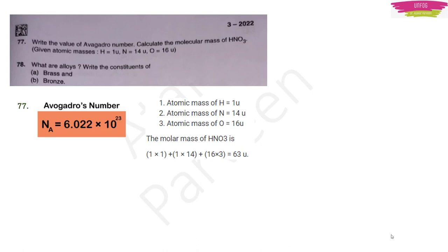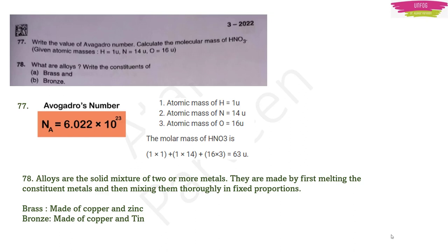Question 78: What are alloys? Write the constituents of brass and bronze. Alloys are solid mixtures of two or more metals made by melting and mixing them in fixed proportions. Brass is made of copper and zinc. Bronze is made of copper and tin.